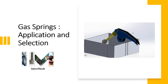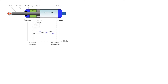This is the general construction of a gas spring. It looks like a piston and cylinder, but the difference is there are no ports, because pressurized nitrogen gas has been factory-filled inside. There is also oil for lubrication. The components include a rod, a seal to prevent oil leakage and maintain pressure, a bearing, a piston, and an end plug.